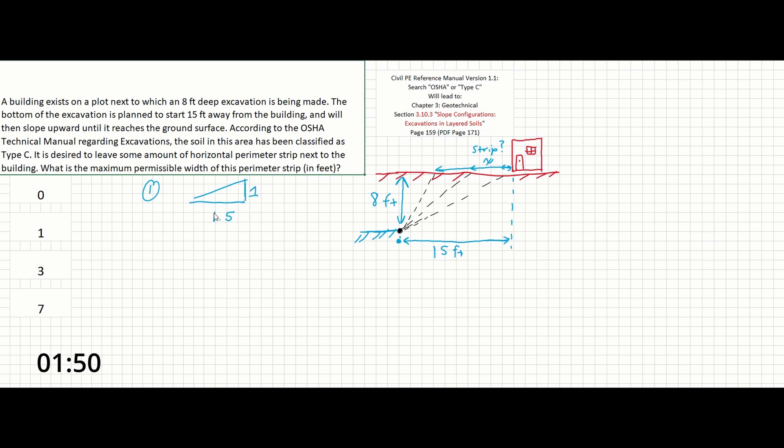So we want to know how much room there is for a perimeter strip. We need to know the horizontal length of the slope. Solving this equation will give that to us.